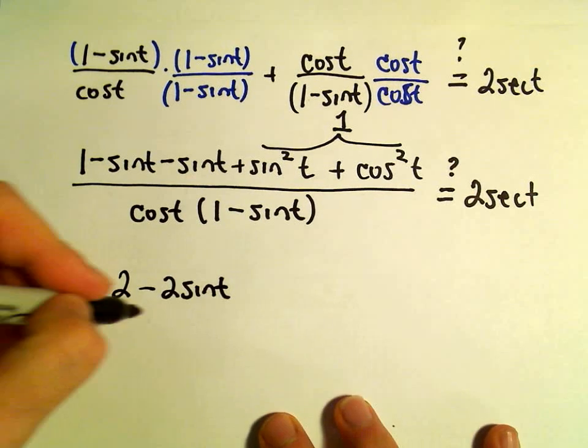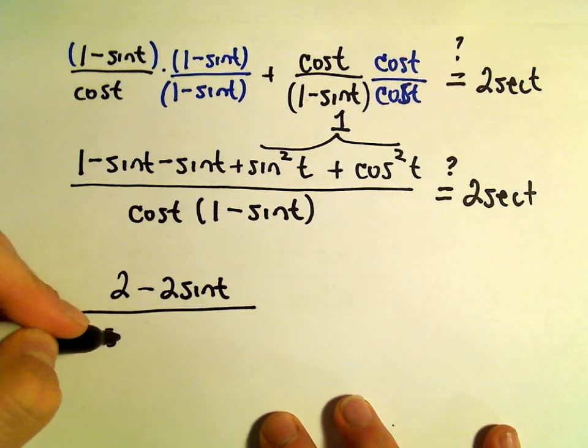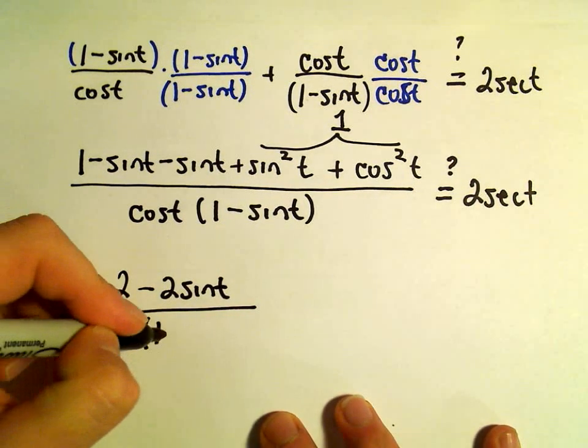So we would have 2 minus 2 sine t over cosine t times 1 minus sine t.